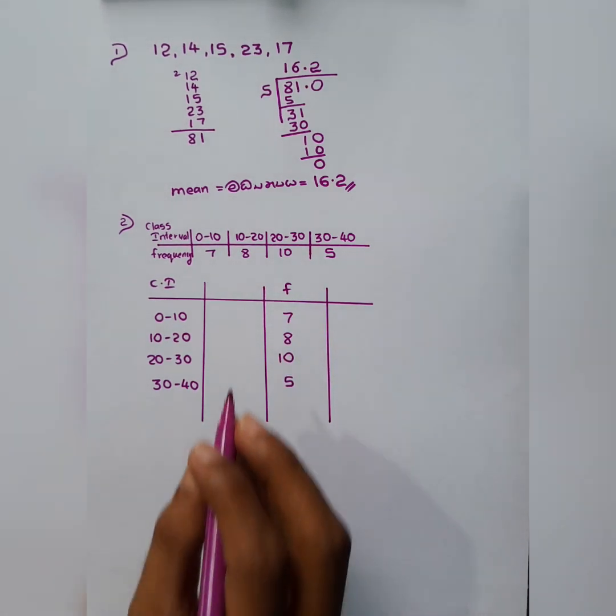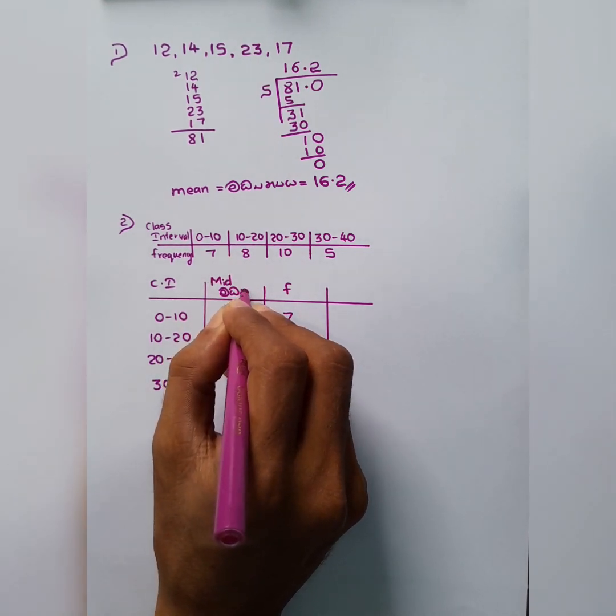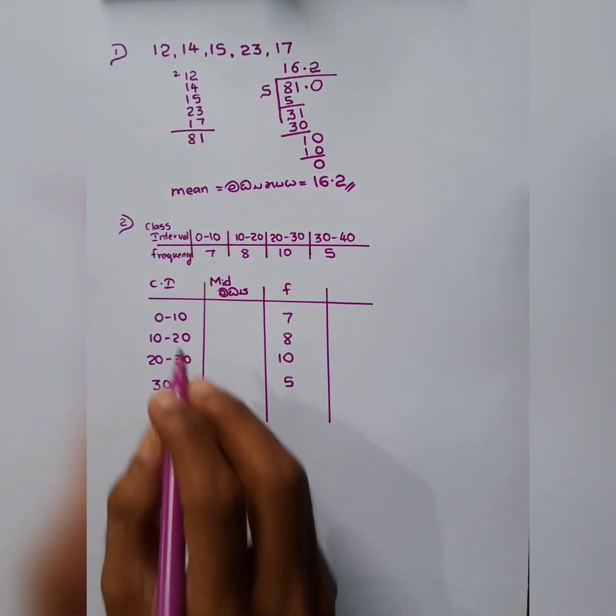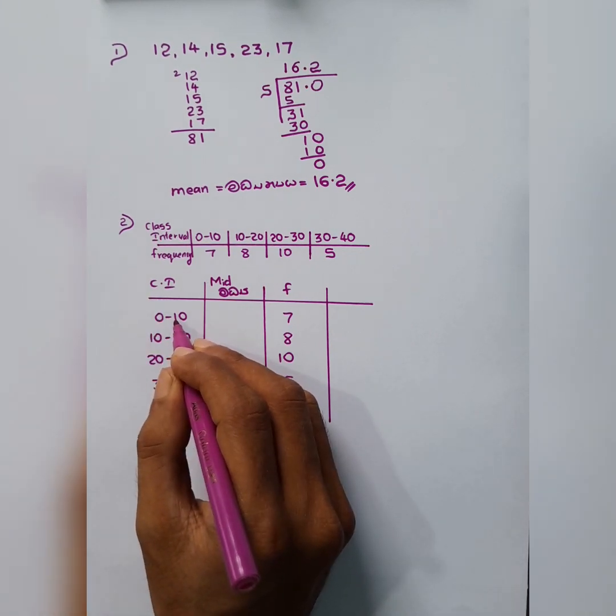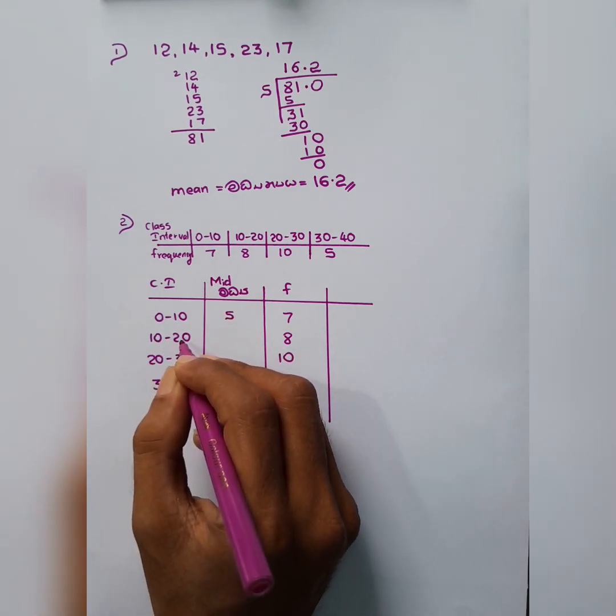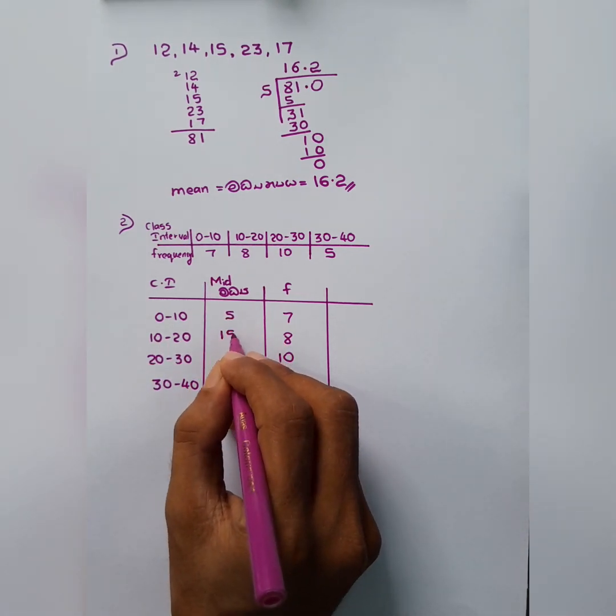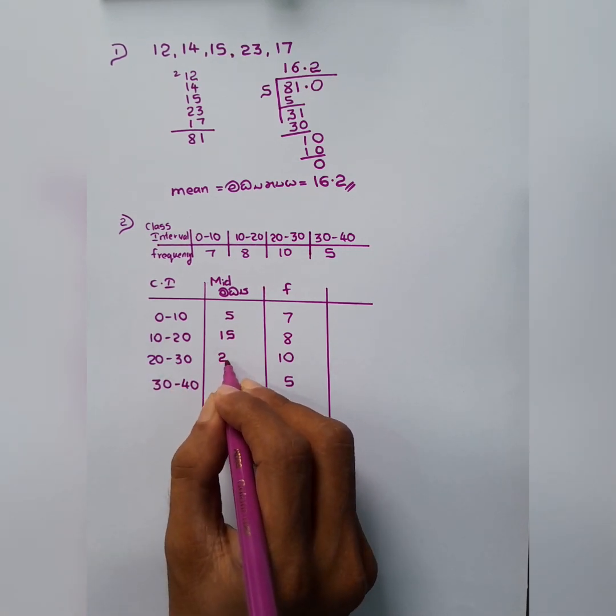And now here the mid value. So what are the mid values? 0 and 10, add and divide by 2. 0 plus 10 is 10, 10 divide by 2 is 5. 10 plus 20 is 30, 30 divide by 2 is 15. 20 plus 30 is 50, 50 divide by 2 is 25.